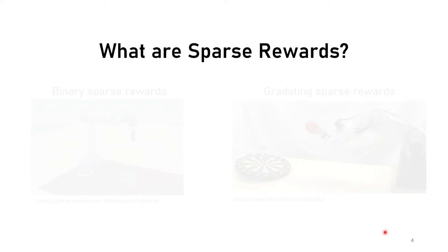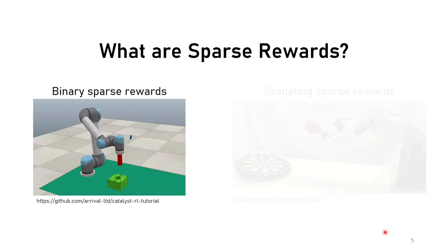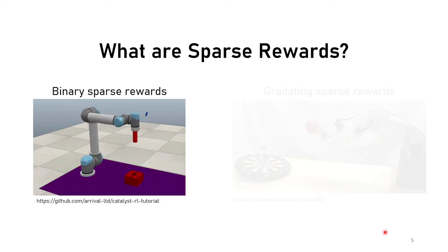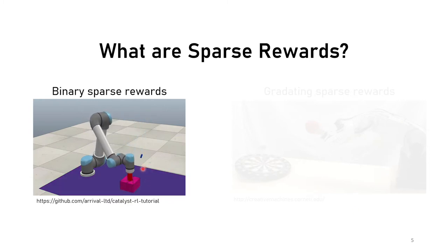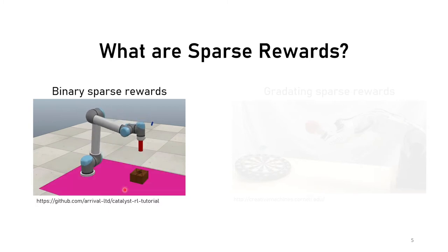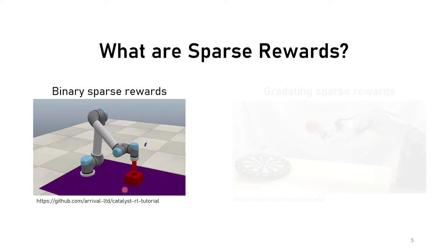There are multiple kinds of sparse rewards, but they can be grouped into two main families. The first is called binary sparse rewards, in which the reward is only given if the task is accomplished. For example, a robot has to put a cylinder inside a box. The reward is only given if the cylinder is inside the box, telling the agent the task has been accomplished — no more information.